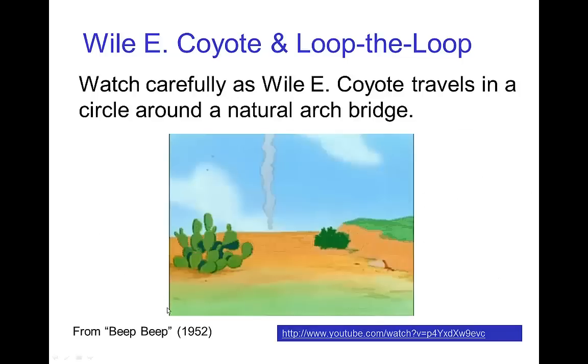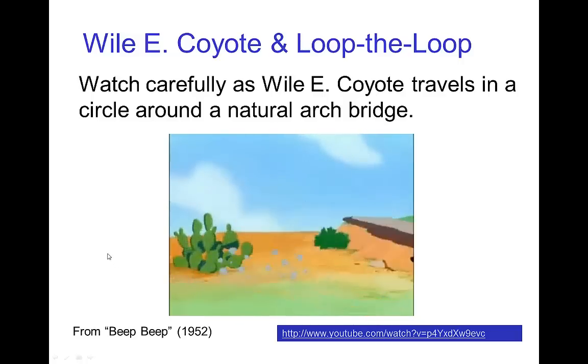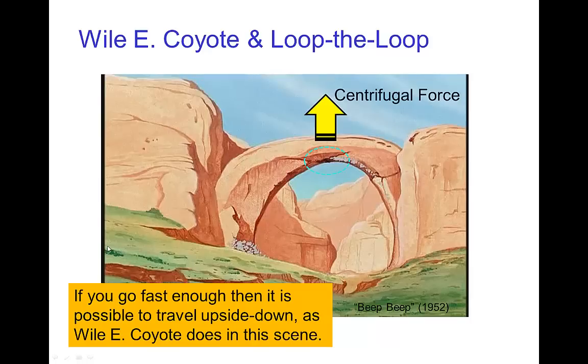Let's look at an example where this appears in Wile E. Coyote. He's on rocket skates, he goes around in this circle and he goes all the way around without falling down because it's as if there's some centrifugal force that's pushing him upward and that's why he doesn't fall down when he is upside down in this scene.